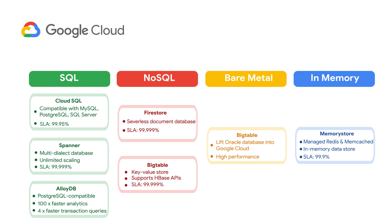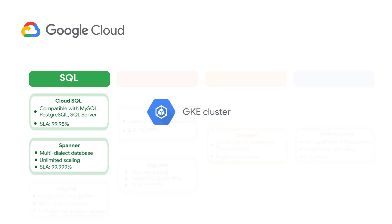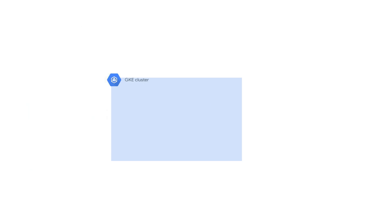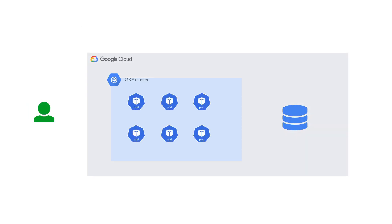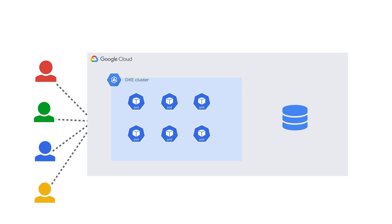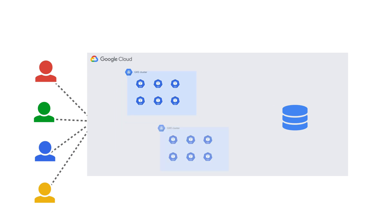If you're looking for a database option for your GKE clusters, Cloud SQL and Cloud Spanner are great choices. Using a fully managed database server outside your GKE cluster can make your applications more highly available, and allows for more complex scenarios like having your apps spread across multiple clusters.